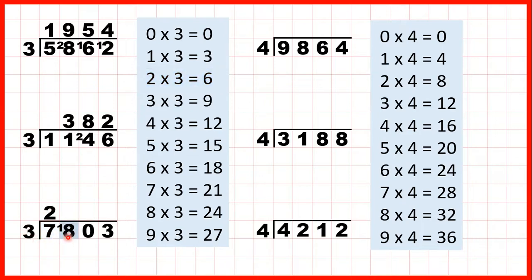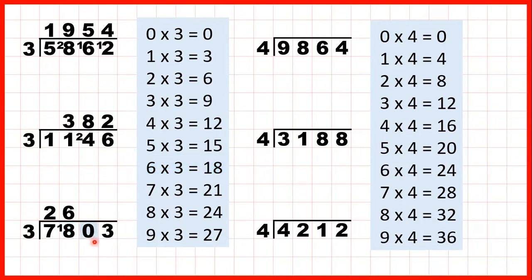So now onto the next digit we have 18 divided by 3. Well 18 is in the 3 times table — that's exactly 6 times 3. So we can write 6 in our answer line, and we don't have any remainder. Because we're dividing by a number that's in the times table, we just move straight on to the next digit.